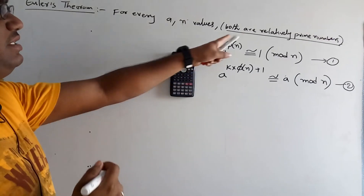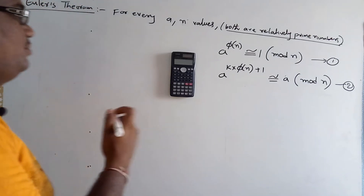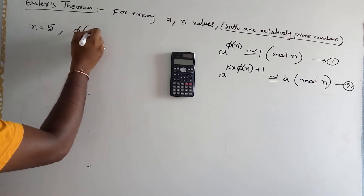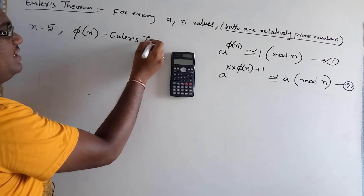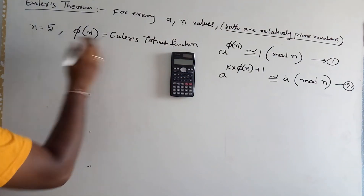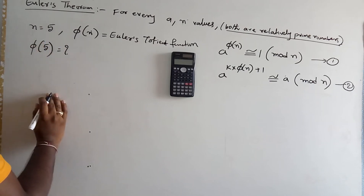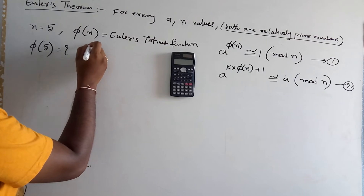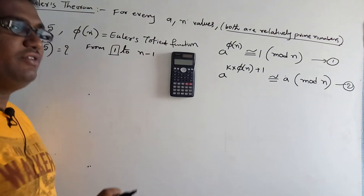First, you need to know what a relative prime number is and how to find relative prime numbers. Suppose n = 5. Now we find φ(n), which we call Euler's totient function. The Euler totient function counts values from 1 to n−1.